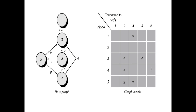Referring to this figure, each node on the flow graph is identified by numbers, while each edge is identified by letters. A letter entry is made in the matrix to correspond to a connection between two nodes. For example, node 3 is connected to node 4 by edge B.